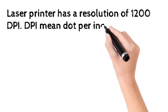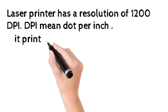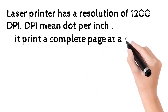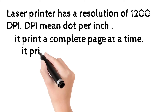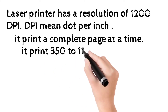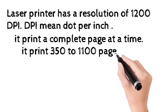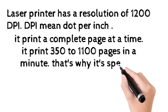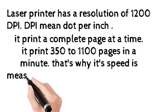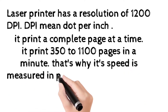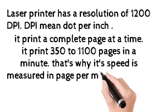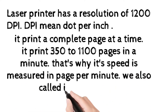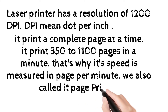Laser printer has a resolution of 1200 DPI. DPI means dots per inch. It prints a complete page at a time and prints 350 to 1100 pages per minute. That is why its speed is measured in pages per minute.